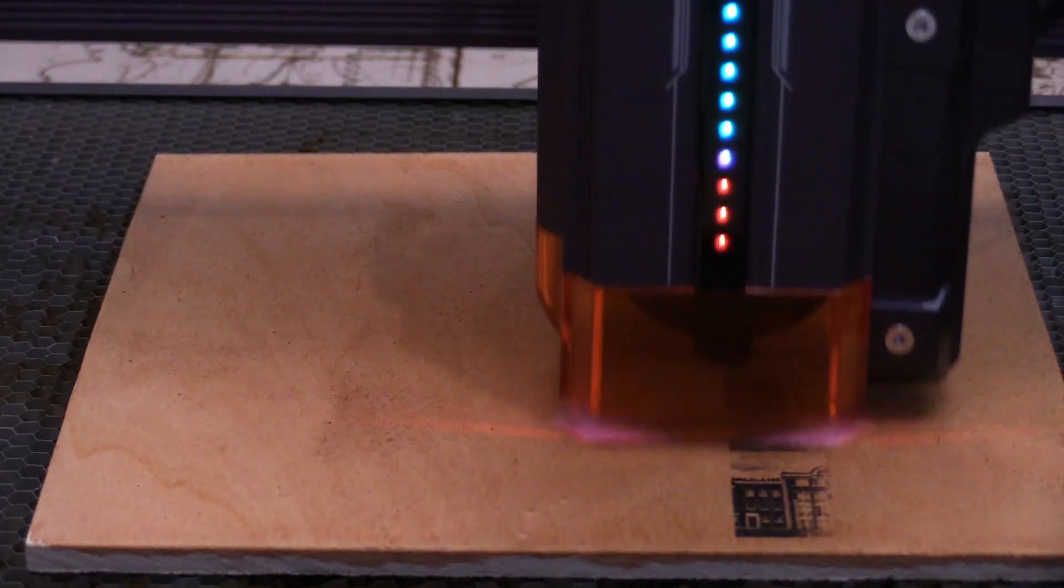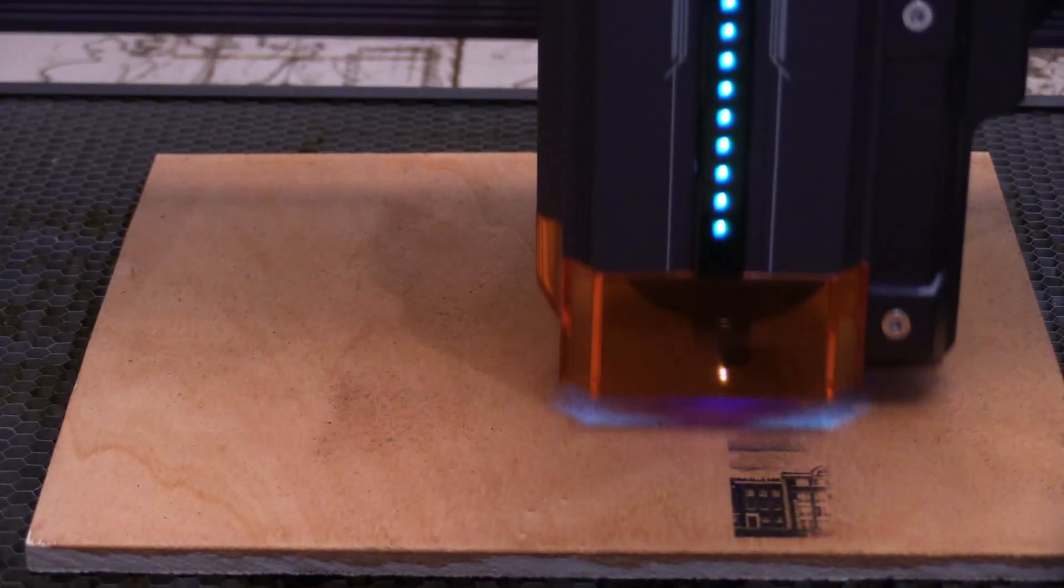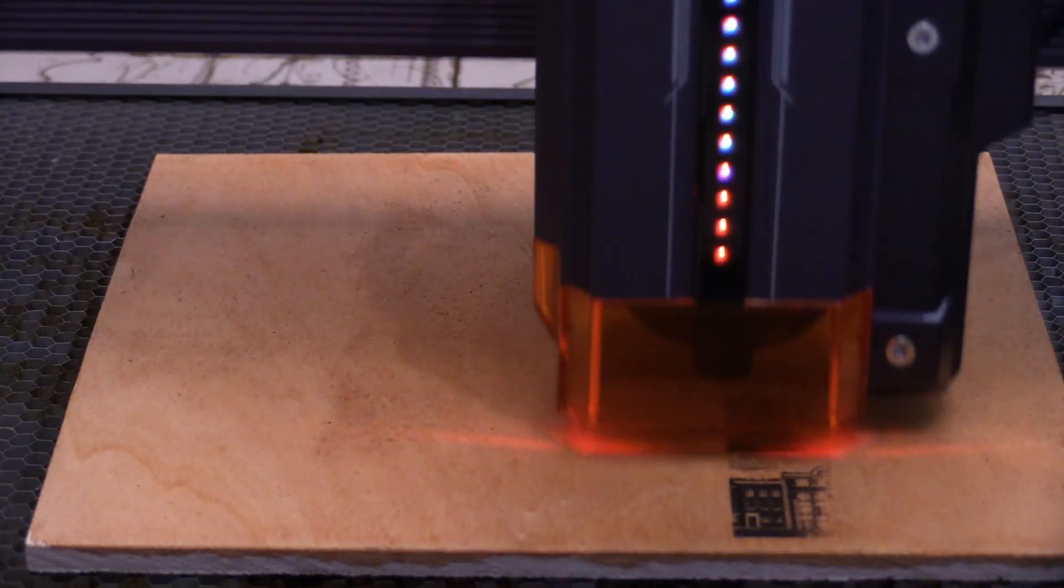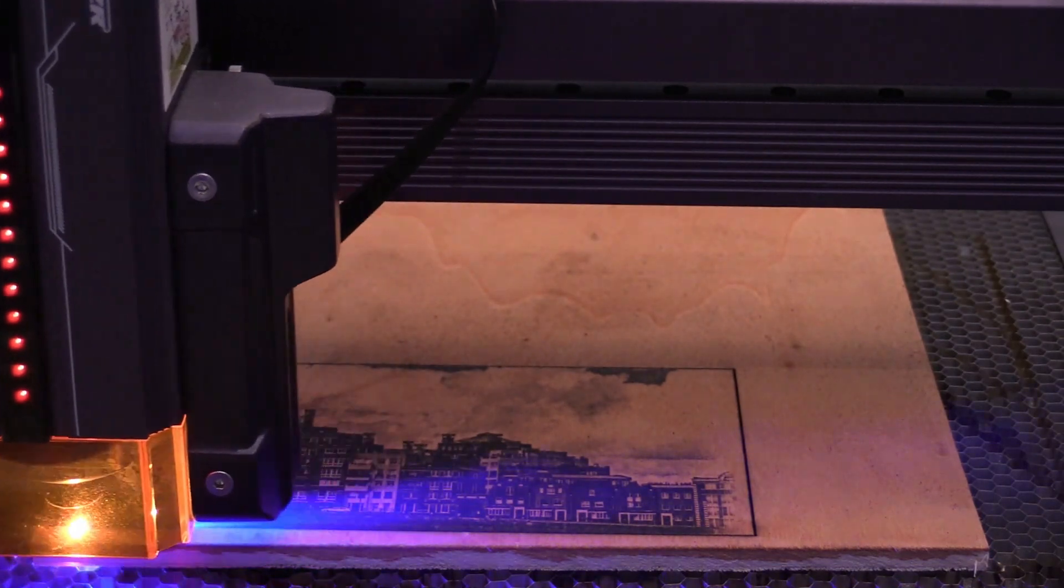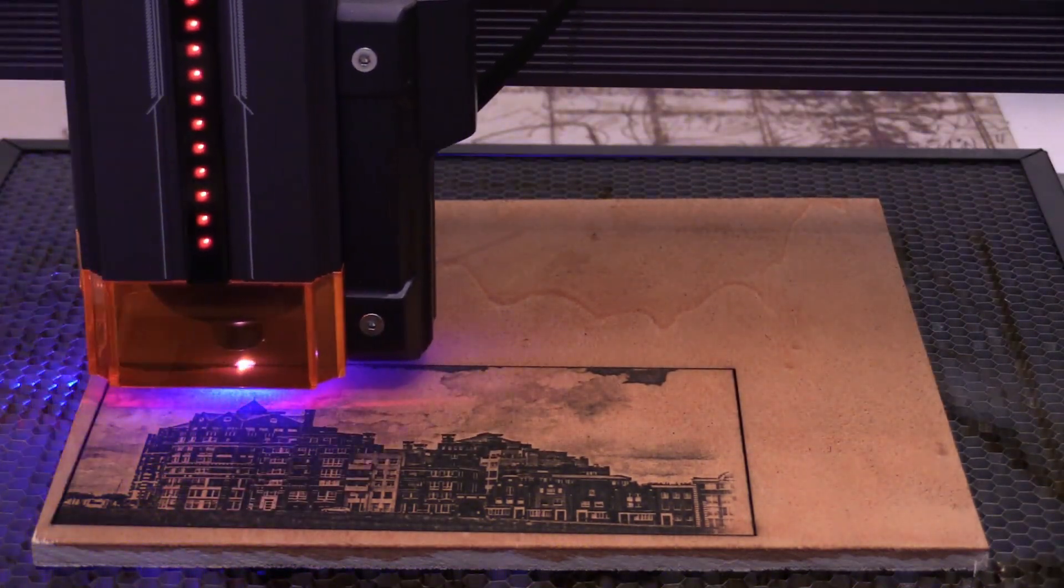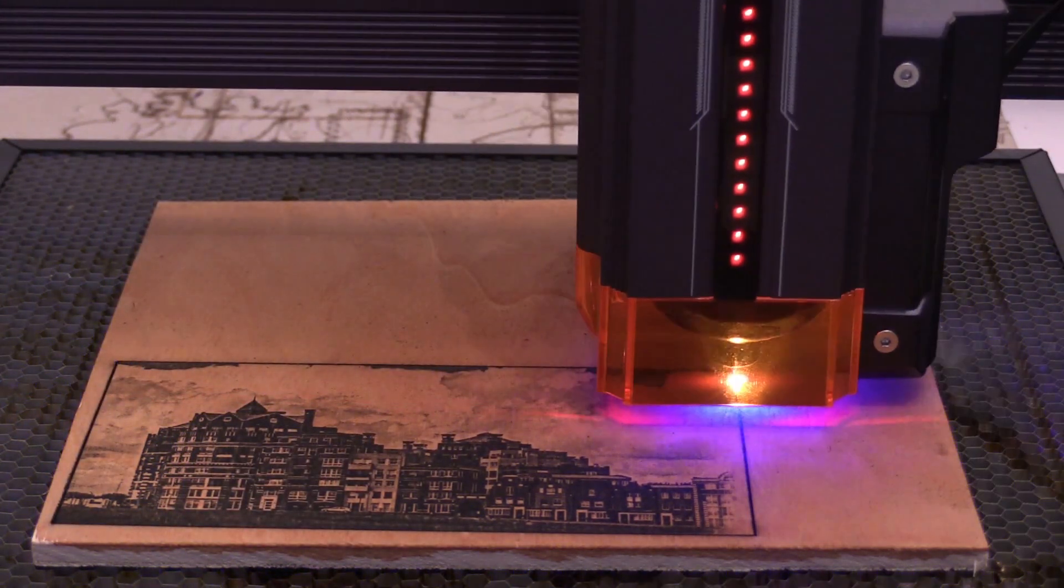A bunch of LEDs on the front of the laser will tell you exactly which power setting the laser is using to engrave. This is a very good indicator to see if the settings you think you are using are actually being used.